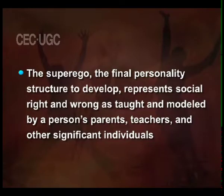Thirdly, the superego — the final personality structure to develop — represents social right and wrong as taught and modeled by a person's parents, teachers and other significant individuals. The superego internalizes representation of the values and morals of society as taught by parents. It is composed of the conscience, which incorporates all the things that the child is punished or reprimanded for, and the ego ideal, which includes those actions the child is rewarded for doing. The conscience prevents us from behaving in a morally improper way, and the ego ideal represents the perfect person we wish we were and motivates us to do what is morally right.